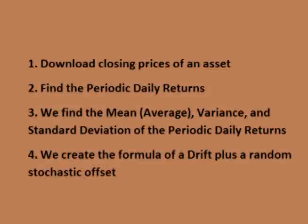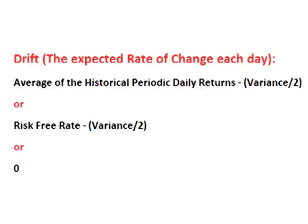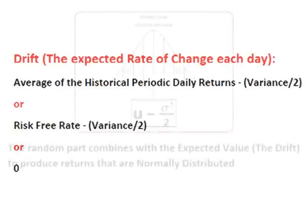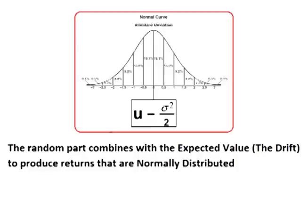To create a Monte Carlo simulator, we perform the following steps: download the daily closing prices of an asset, find the periodic daily returns, find the mean, variance, and standard deviation, and create the formula of a drift plus a random stochastic offset. For the drift, we use the historical mean minus half the variance, the risk-free rate minus half the variance, or simply zero. For the random part, we use random percentages of the area under the curve that combine with the drift to produce theoretical future daily returns normally distributed around the drift.